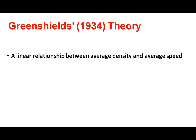The earliest work to correlate these parameters was done by Greenshields in 1934. He assumed a linear relationship between average density and average space mean speed, and the relation was: V = A − B × K.